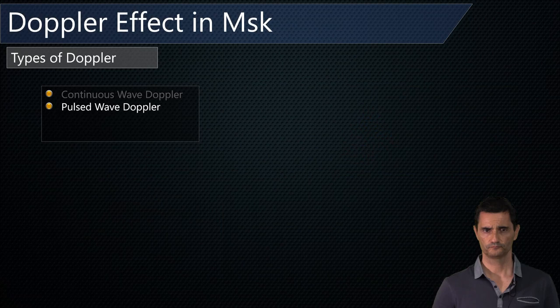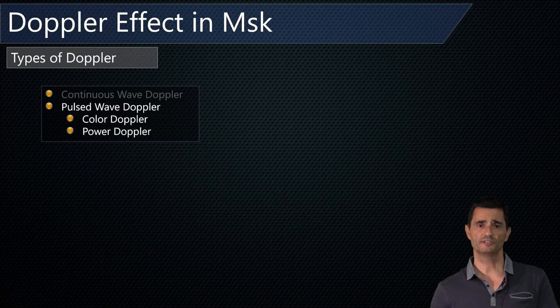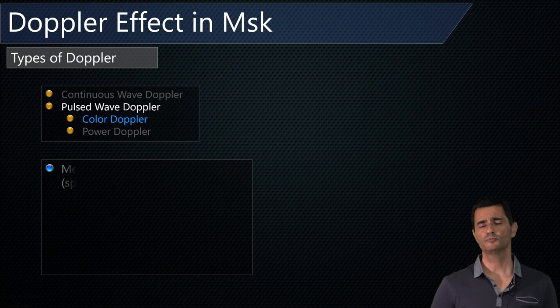In MSK ultrasound, we use pulsed wave Doppler. This type of Doppler has two subtypes: color Doppler and power Doppler. You can use both in MSK, but as you will see, power Doppler is the most commonly used.